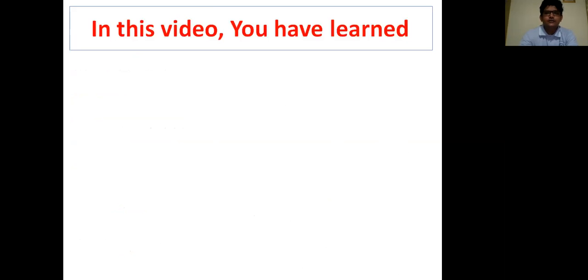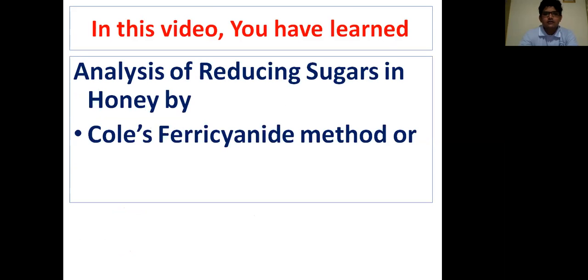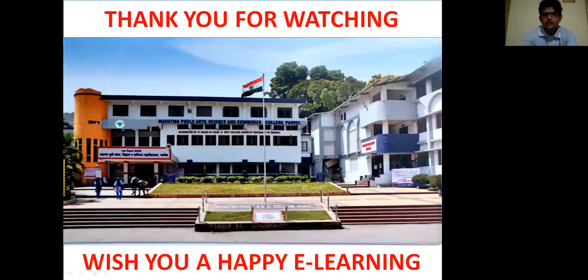Dear students, in this video you have learned about the analysis of reducing sugar in honey by two different methods: first was the Cole's ferricyanide method and second was the Lane-Eynon method. Please learn the next topic of this unit in my next video. Till then, thank you very much for watching this video and I wish you a very happy e-learning.